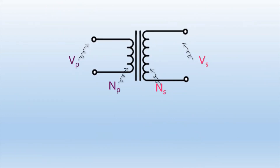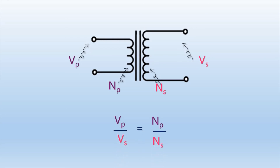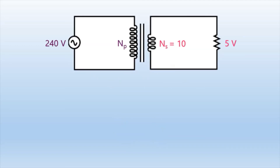The ratio of the primary voltage to the secondary voltage is equal to the ratio of the number of turns of the primary coil to the number of turns of the secondary coil in a transformer. This relationship can be written as: Vp over Vs equals Np over Ns. The formula can be applied when there is one unknown among the four variables: Vp, Vs, Np, or Ns.